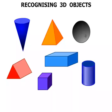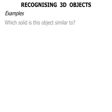Now all of these 3D objects we can refer to as solids. Let's look at some examples. Which solid is this object similar to?